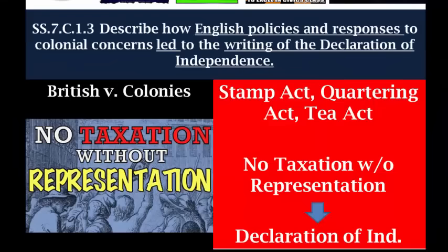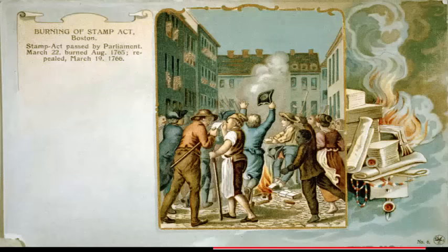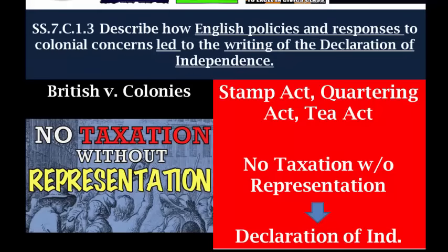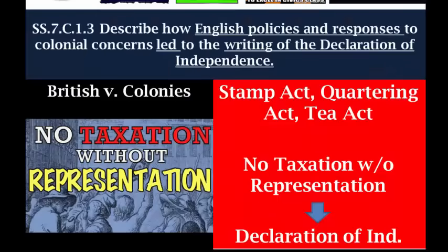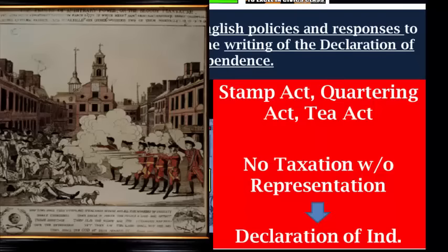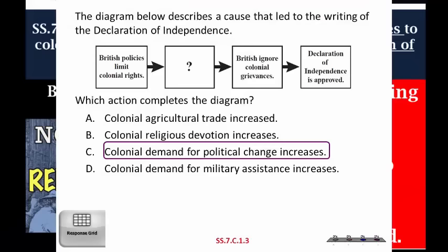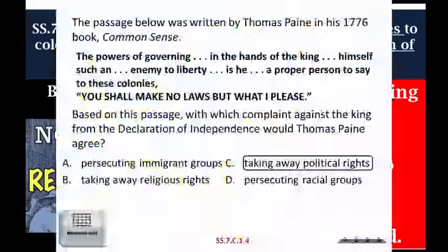What events led to the Declaration of Independence? We need to know how English policies and their responses to our complaints led to the Declaration. There were big complaints over taxes — the Stamp Act, the Sugar Act, the Tea Act — and the colonists were especially mad because they had no say in these British policies: 'no taxation without representation.' The British also sent large numbers of troops, and the Quartering Act forced colonists to house British soldiers. When the colonists complained, the British refused to acknowledge their grievances. Events like the Boston Massacre and finally Lexington and Concord, where fighting had started before independence was even declared, were key. Your answers are either the taxes, the British soldiers and Quartering Acts, or how Britain ignored complaints.